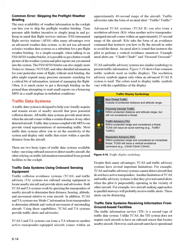TCAS and TA systems provide traffic alerts and advisories. They can issue a traffic advisory, TA, whenever another active transponder-equipped aircraft comes within an approximately 40-second range. Traffic advisories take the form of an oral alert — Traffic, Traffic. Advanced TCAS systems, TCAS-2, can also issue a Resolution Advisory, RA, when another active transponder-equipped aircraft comes within an approximately 25-second range. RAs take the form of an avoidance command that instructs you how to fly the aircraft in order to avoid the threat. An oral alert is issued that instructs the pilot to perform a vertical avoidance maneuver — for example, Climb, Climb or Descend, Descend. TCAS and traffic advisory systems use similar symbology to present traffic information, and the resolution advisory symbols appear only when an advanced TCAS-2 system is used.